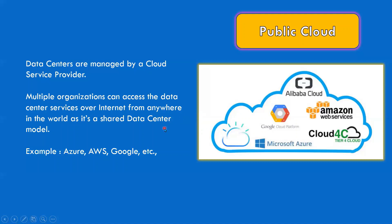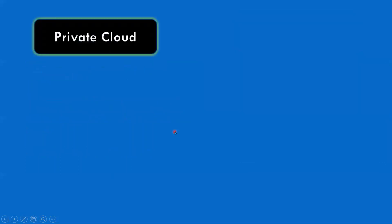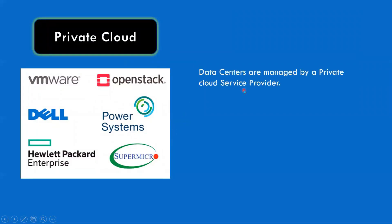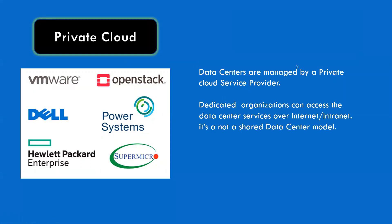Public cloud is beneficial in terms of cost, high availability, security, etc. If I talk about private cloud — private cloud is also a data center managed by private cloud service providers. If you are having dedicated data centers for an organization, that kind of cloud model is called private cloud, where only a single organization can access or upload the data or run their services or applications. Examples of private cloud include IBM, OpenStack, HP, Dell, etc.